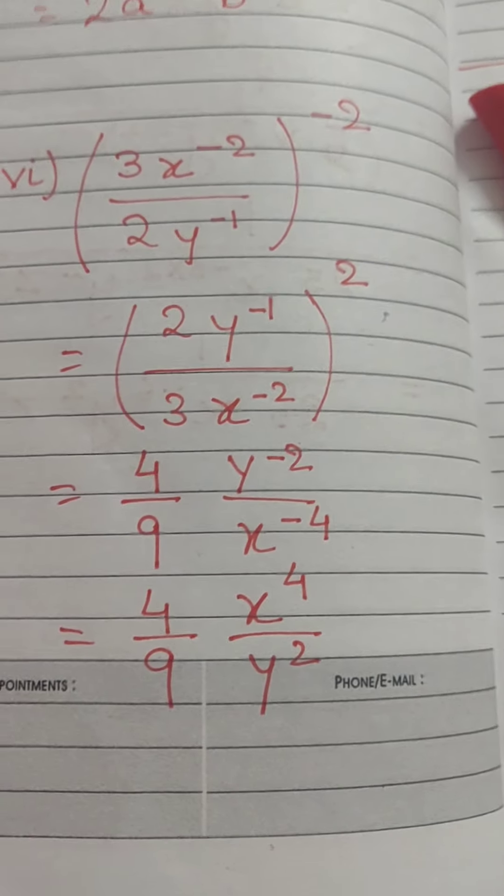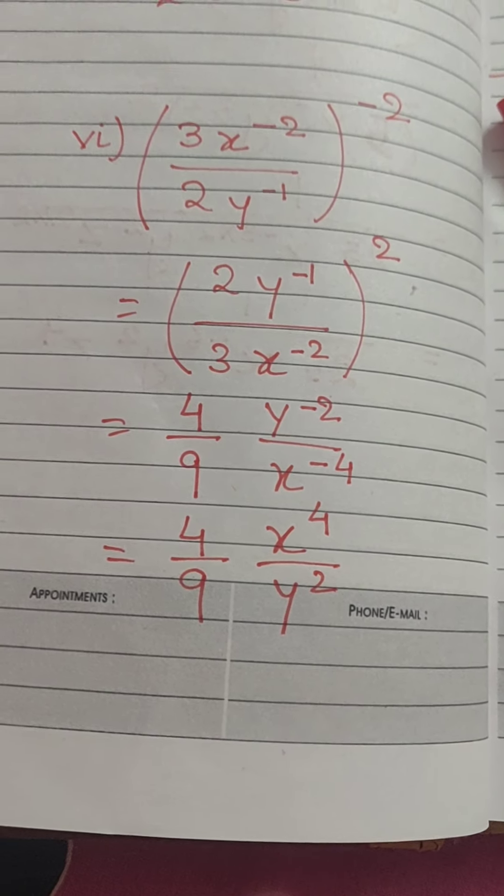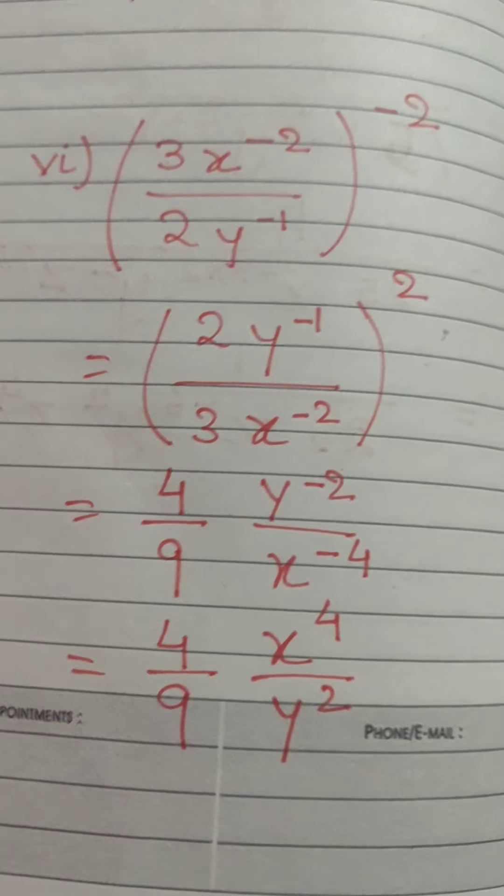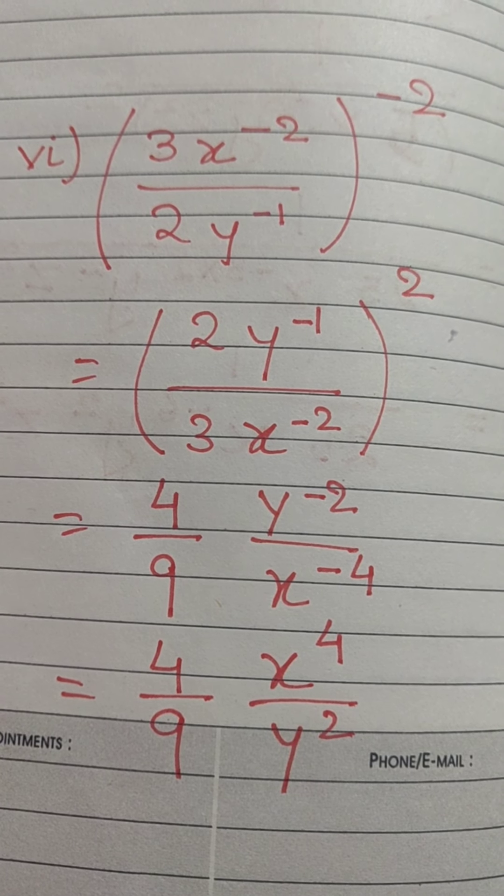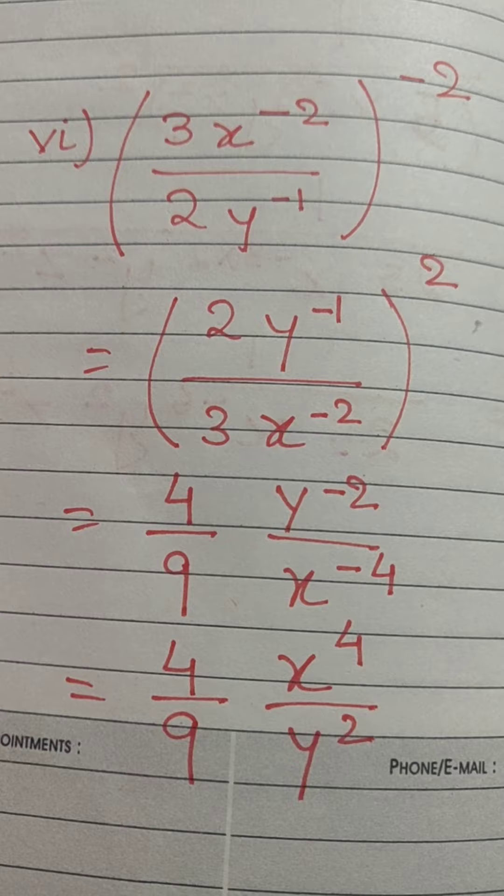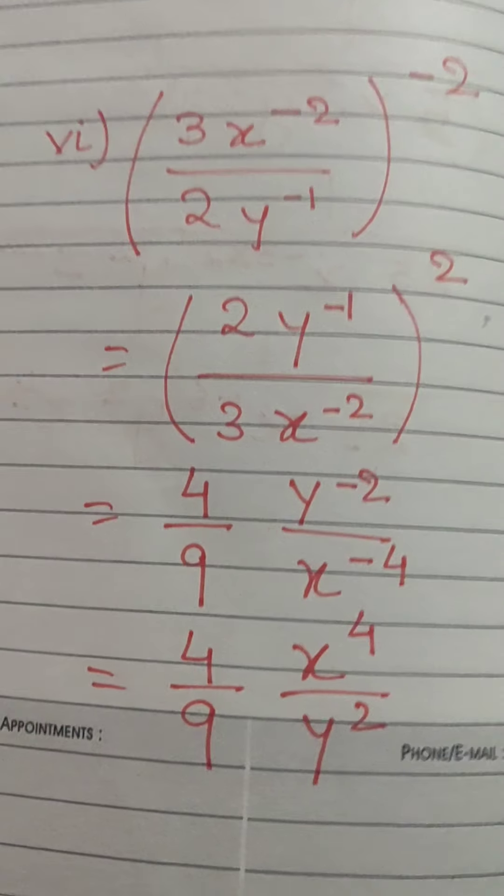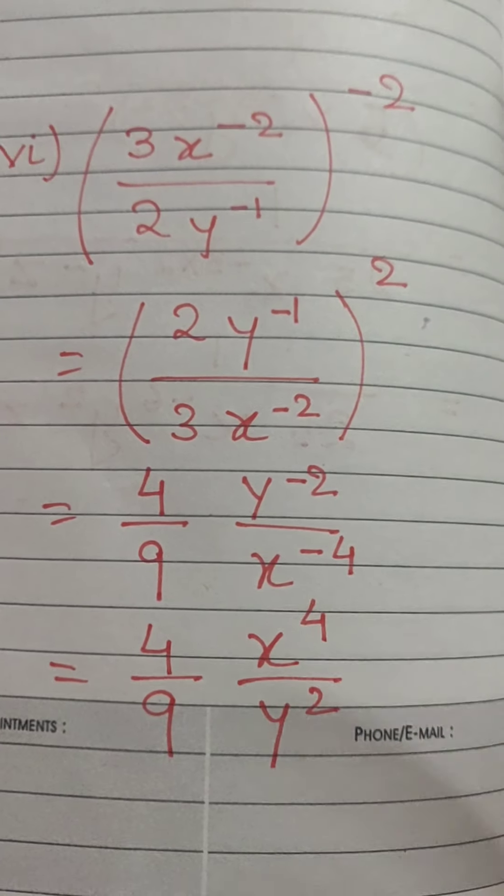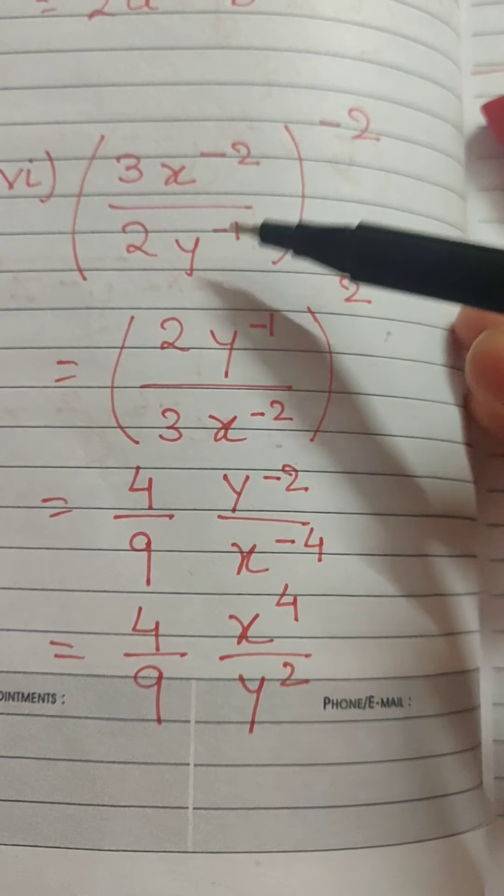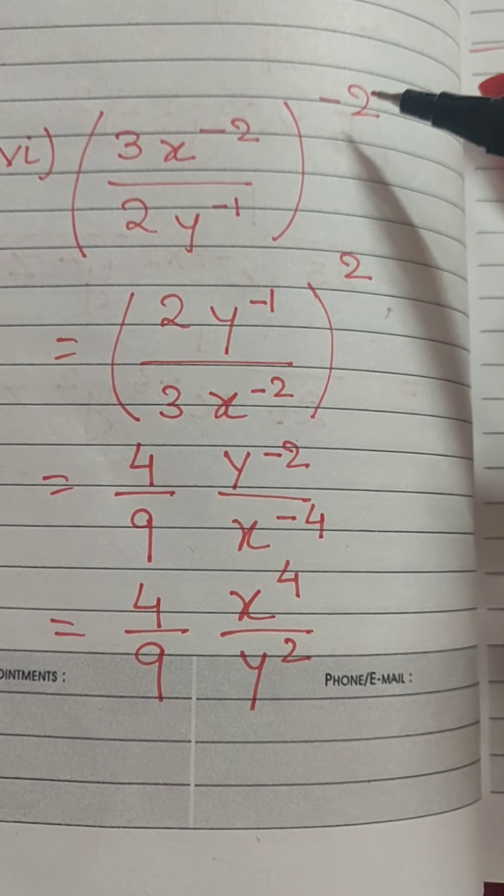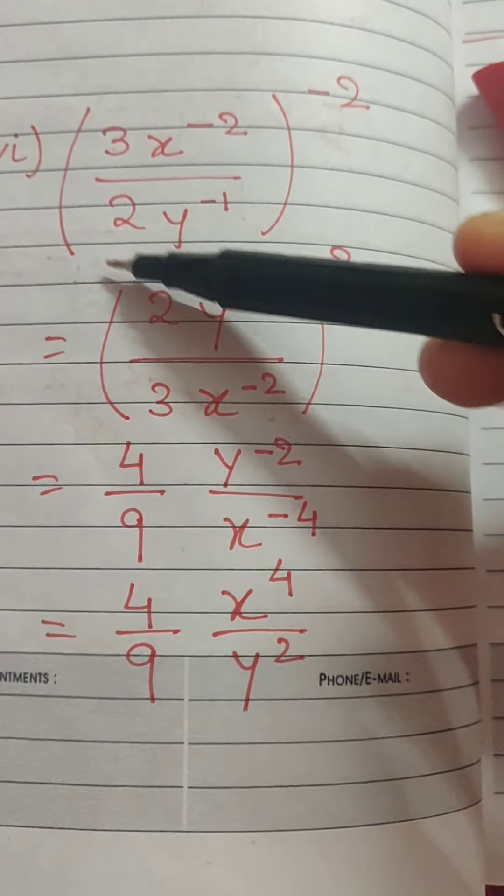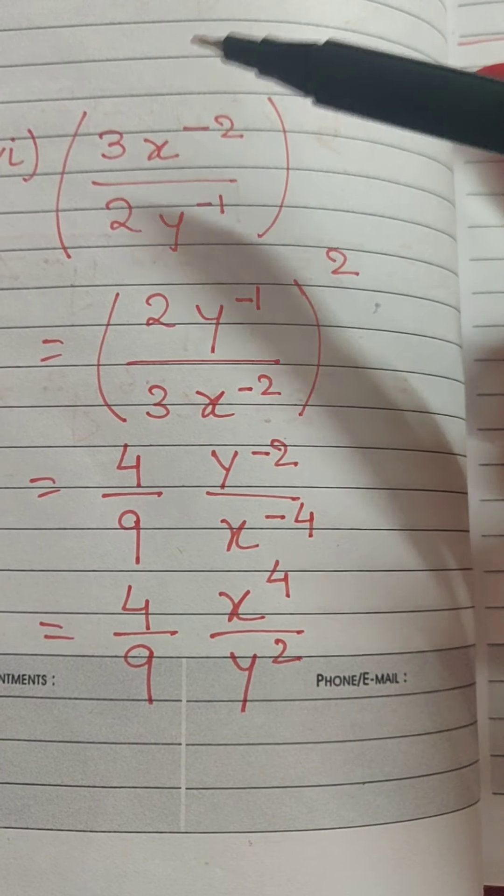The next question is question number 6. 3x to the power minus 2 divided by 2y to the power minus 1 whole raised to the power minus 2. Now, we can do it in two different ways. Here I have shown you one way that let us first consider this exponent. It is negative. So, what we have to do is the base gets reciprocated.